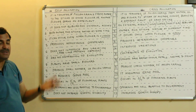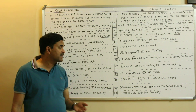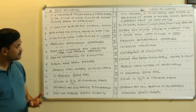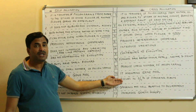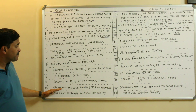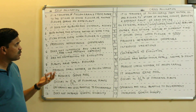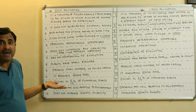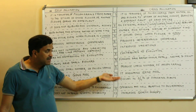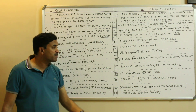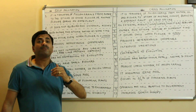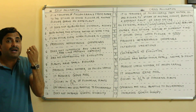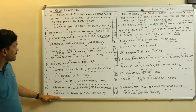Tenth point: self-pollination occurs in only about one-fourth of flowering plants, while 75% — that is three-fourths — of angiospermic plants perform cross-pollination, meaning cross-pollination occurs in the majority of flowers. Eleventh point: self-pollinated offspring are less adaptive to the environment because variations are not produced, while cross-pollinated offspring are more adaptive and better able to cope with the environment.